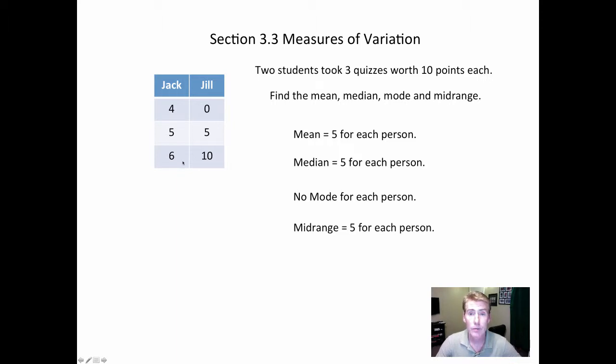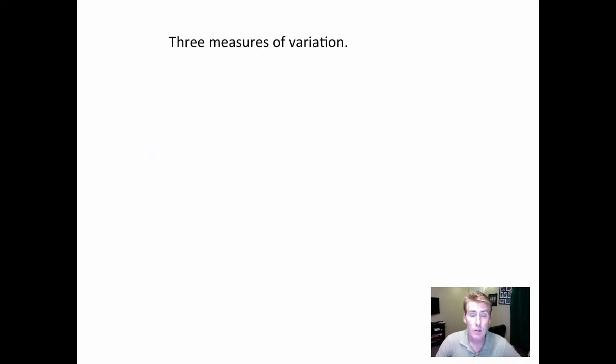So as far as those things, there seems to be no difference. But if you look at it, you can see that Jack's scores are more consistent. His scores are only one point apart apiece. Jill's are five points apart.